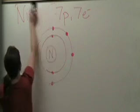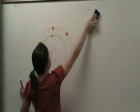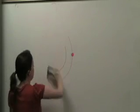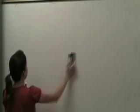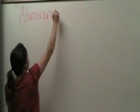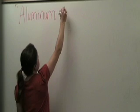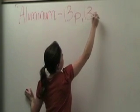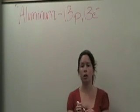Let's go through another example. We're going to do aluminum this time. You can figure out how many electrons aluminum has based on the atomic number that you can find on your periodic table. Aluminum has 13 protons and therefore 13 electrons.